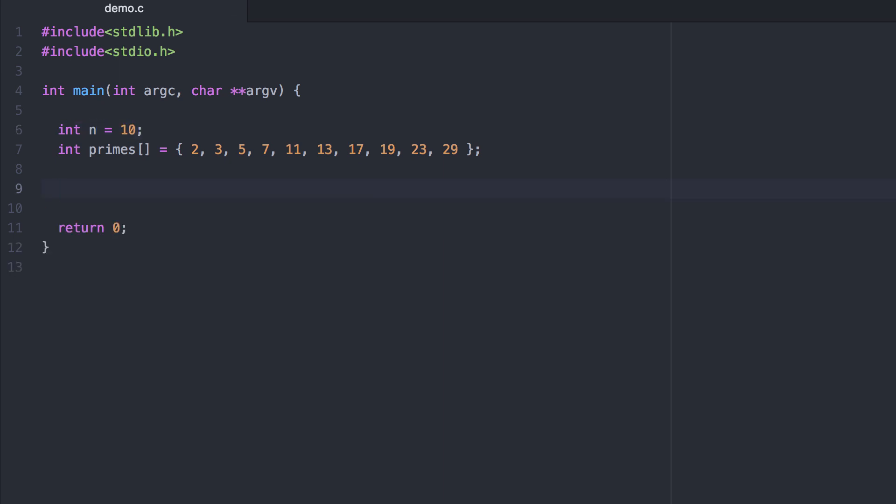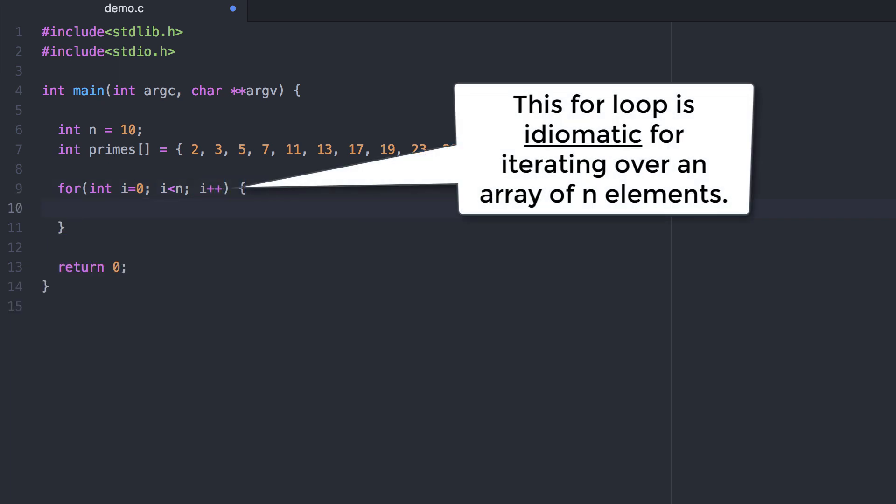Now let's go ahead and write a for loop to sum up each one of these numbers stored in the array. This is a typical idiomatic for loop to iterate over elements in an array, where n is the size of the array.